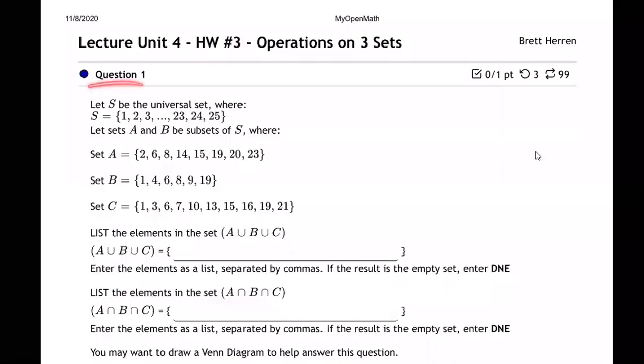Okay, so question number one. S is the universal set with the numbers 1 through 25. There's set A, set B, set C. They want us to list the elements in A union B union C.